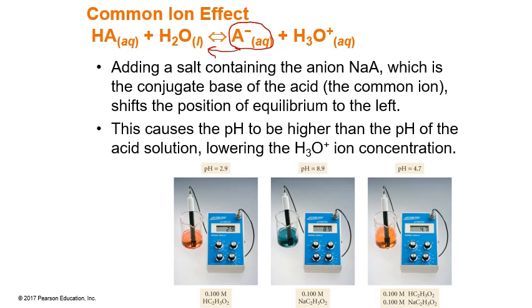So what this means is that when we add that conjugate base, we add that A minus, it shifts it towards the reactants and away from the products, which means that our OH minus in the solution ends up decreasing the amount. And so our pH is going to be a higher pH than what it would be if we didn't have that common ion in the solution.